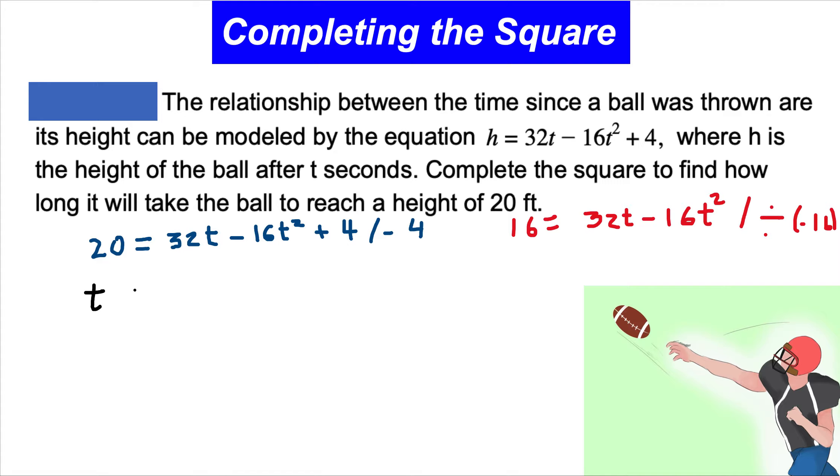Dividing -16t² by -16 gives t². Then 32t divided by -16 gives -2t. On the other side, 16 divided by -16 equals -1.